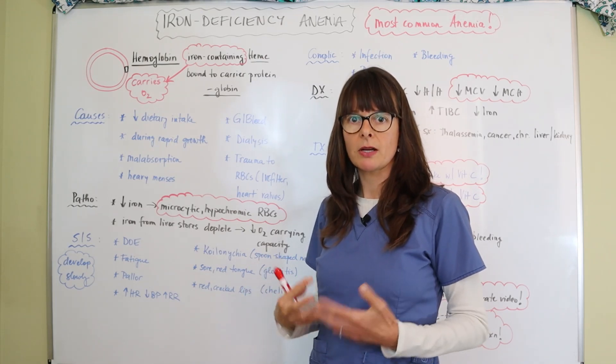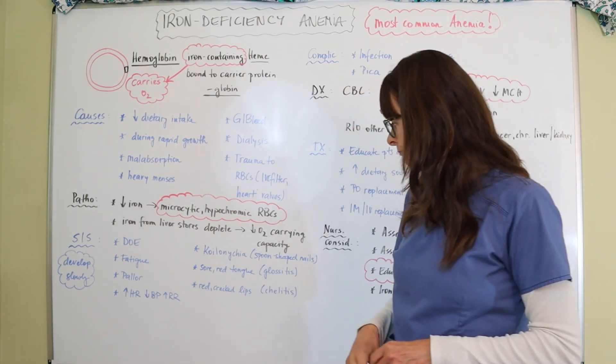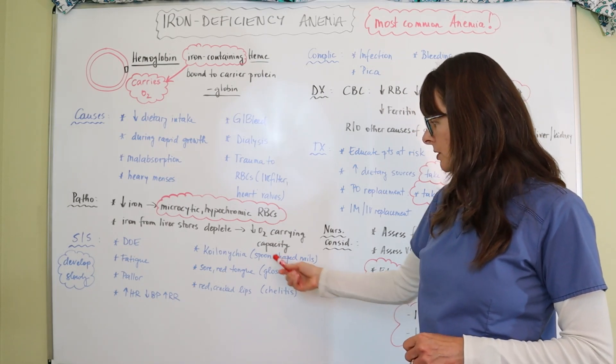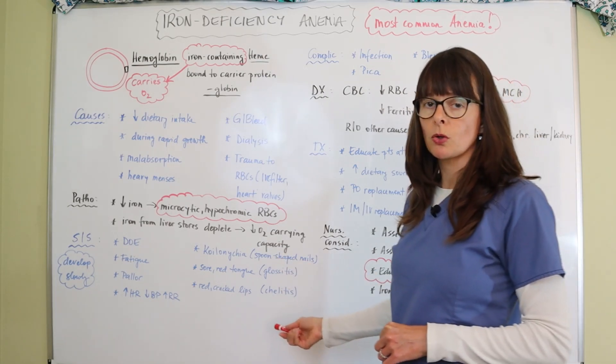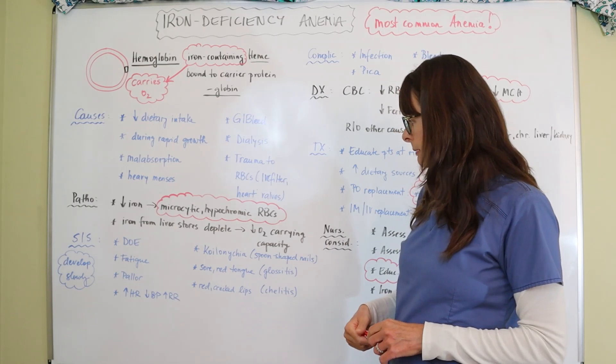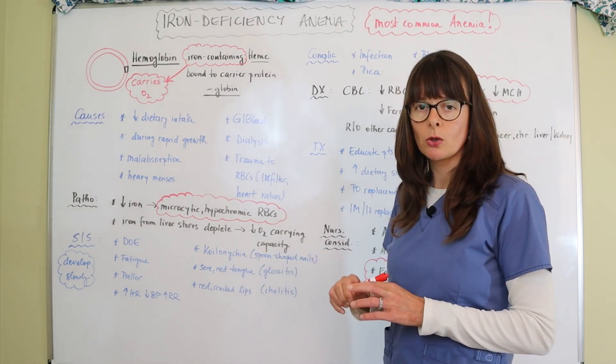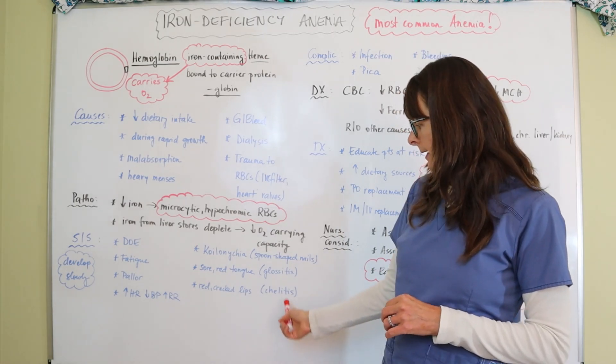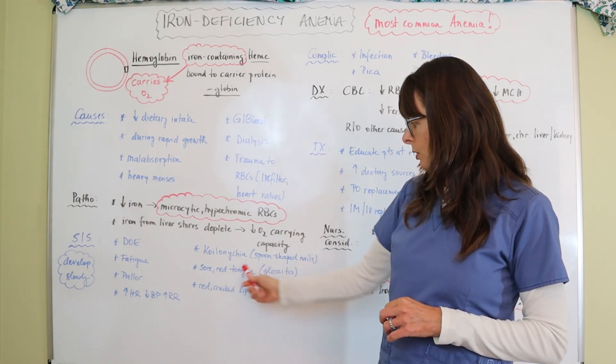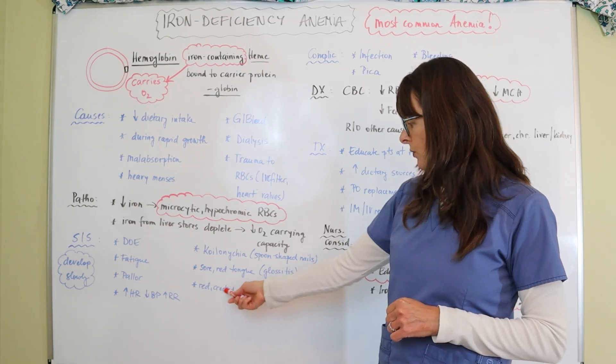There are three different special terms that we hear with iron deficiency anemia which is koilonychia which are spoon-shaped nails, and you can Google search what that looks like, and then patients also may have glossitis which is a sore red tongue or cheilitis which are red and cracked lips.